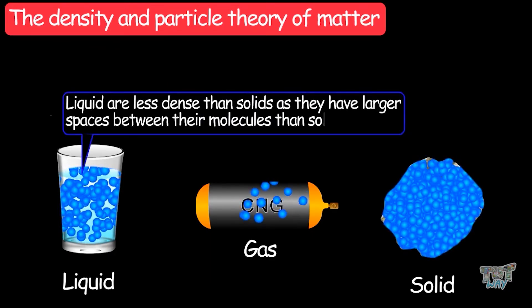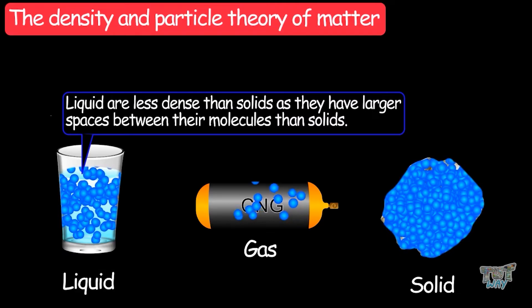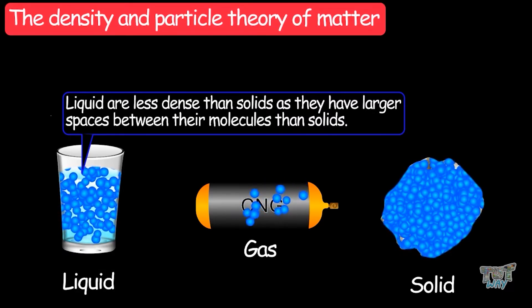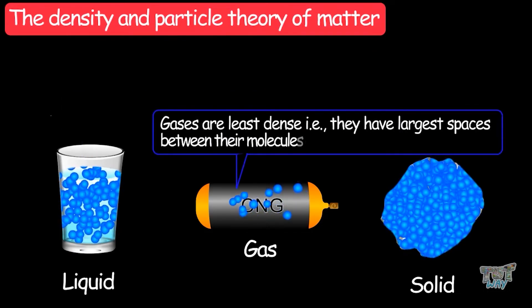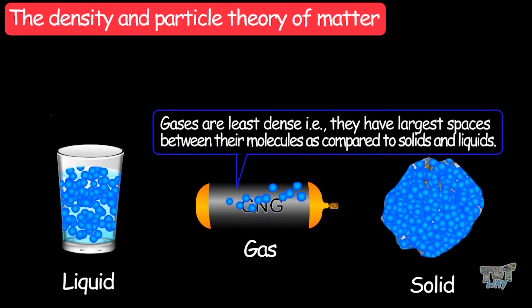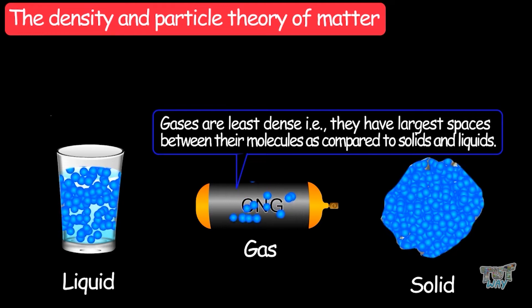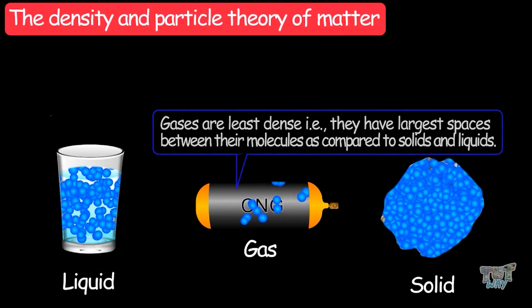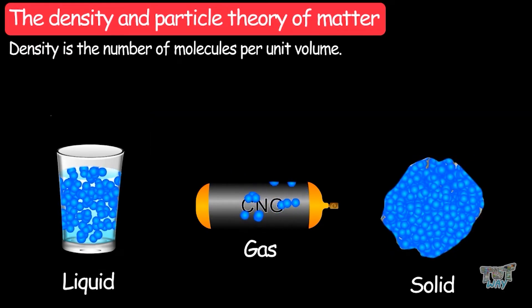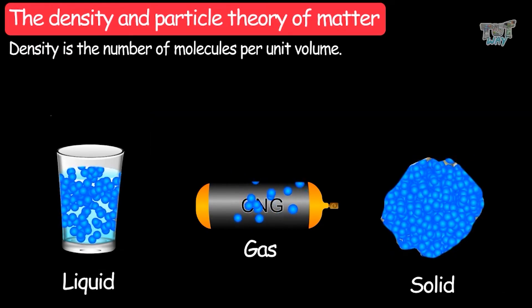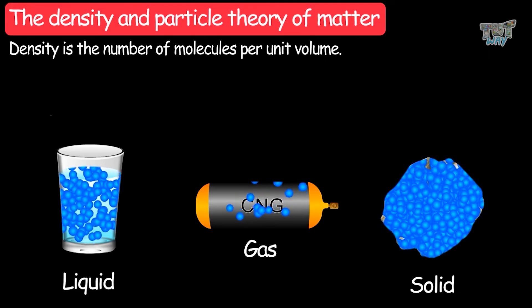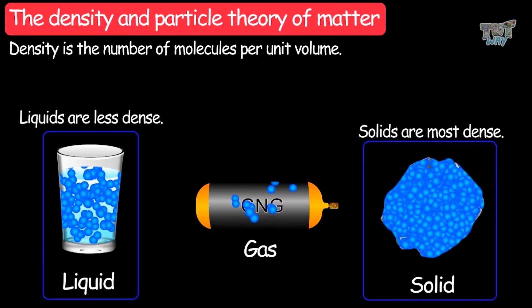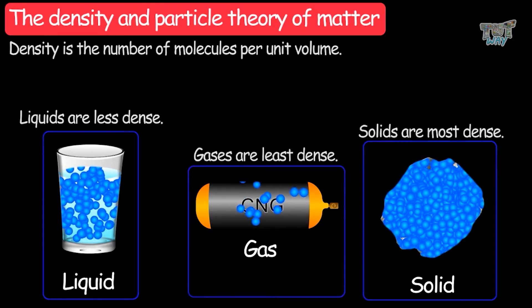Liquids are less dense than solids as they have larger spaces between their molecules. Finally, gases are the least dense — they have the largest spaces between their molecules when compared to solids and liquids. So density is the number of molecules per unit volume, and solids are most dense, liquids are less dense, and gases are the least dense.